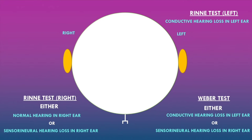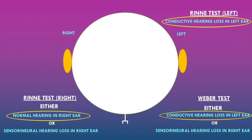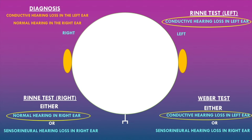To determine the overall diagnosis, the Rinne test in the left ear confirmed conductive hearing loss, also confirmed by the Weber test lateralization toward the left ear. In the right ear, the Rinne test showed either normal hearing or sensorineural hearing loss, but the Weber test confirmed no pathology in the right ear, indicating normal hearing. The overall diagnosis is conductive hearing loss in the left ear and normal hearing in the right ear.